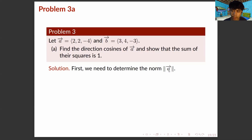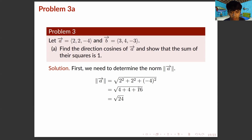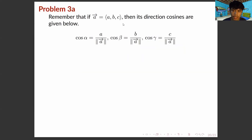For part A, we first determine the norm. The norm is the square root of 2 squared plus 2 squared plus (−4) squared. We get the square root of 24, or 2 square root of 6. Then we can solve the direction cosines: cosine alpha equals A over the magnitude of vector A, cosine beta equals B over the magnitude of vector A, and cosine gamma equals C over the magnitude of vector A.